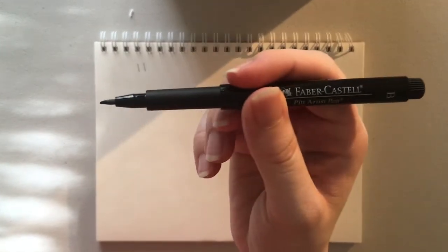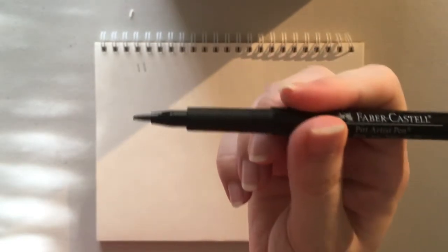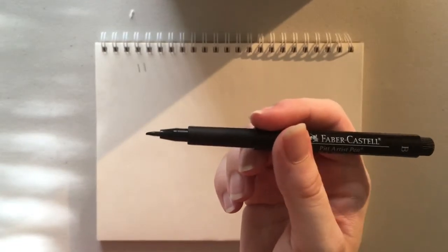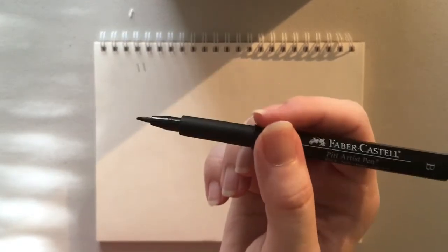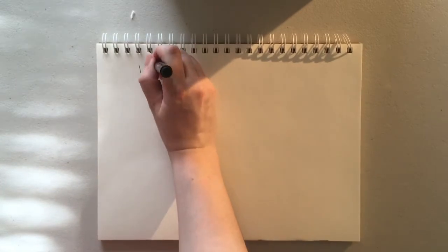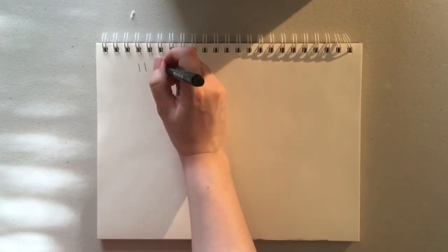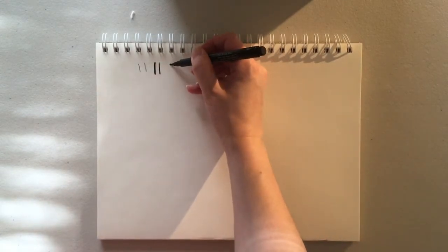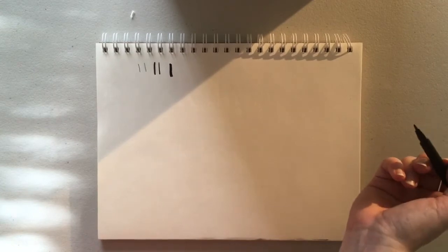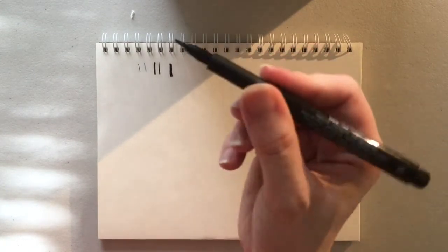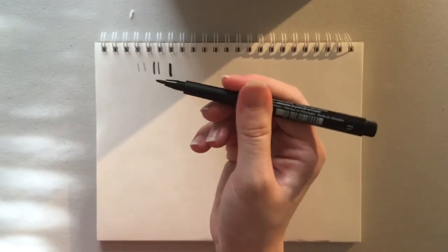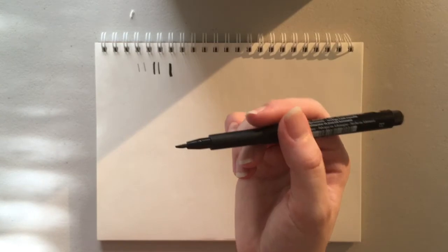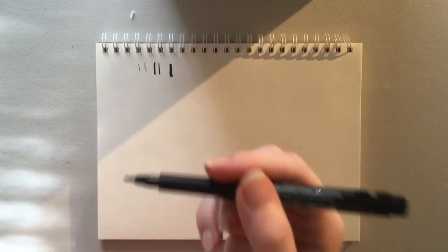Now I'm using a hard tip brush pen which is different than a soft one. A soft tip brush pen is going to work a lot more like a paint brush. Whereas the hard tip you can use in two different ways. If you use it straight up and down you can get a thin line. If you use it on its side and push down you can get a much thicker line. So it works in both directions. Very similar to a paint brush but a little bit more sturdy and easy to control. And that's what I'm mostly going to be using today.